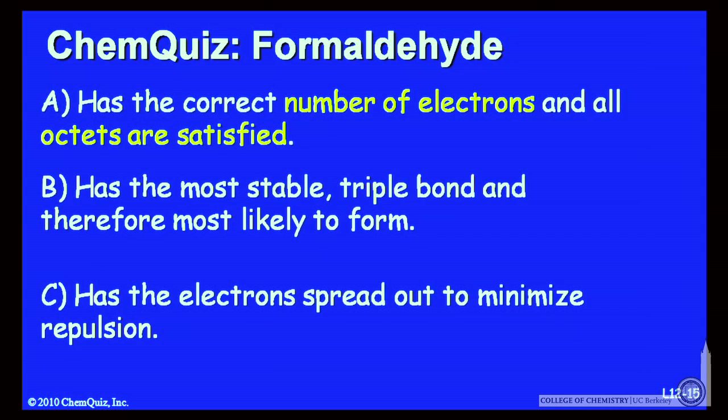Let's look at possible explanations for all the answers. A has the correct number of electrons and all the octets are satisfied. Or B has the most stable triple bond and therefore the most likely to form. C has the electrons spread out to minimize the electron electron repulsion. Think about those options for a minute and make another selection.